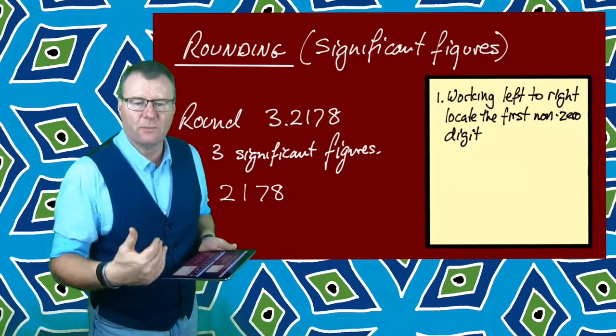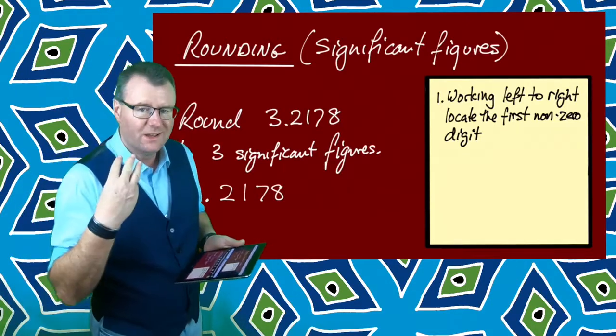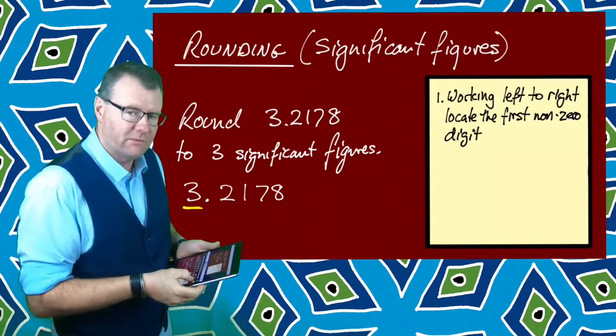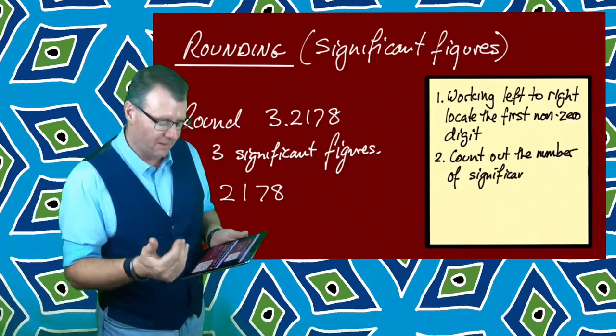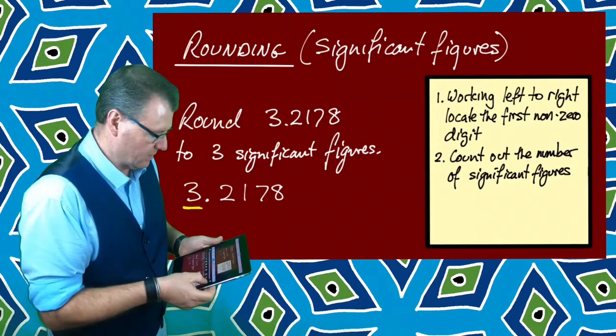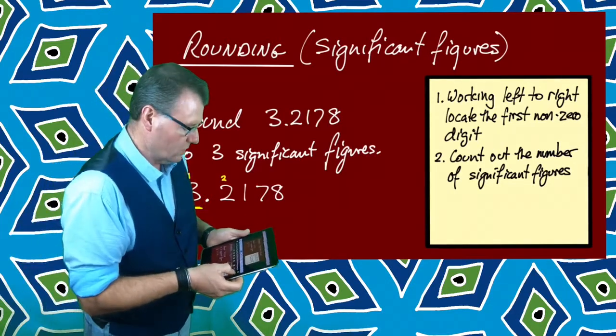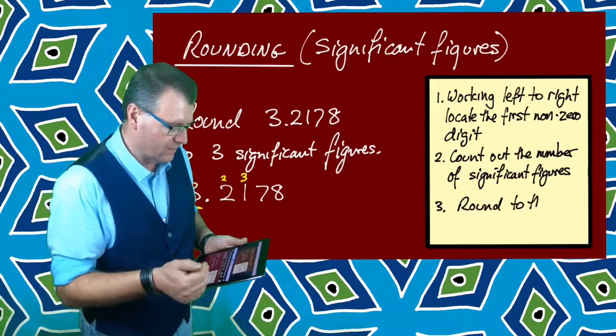That's where I'm going to start from, and I'm taking three significant figures for this question. From there I'm going to count out the number of significant figures, which in this case is three. So I'm going to count one, two, three. These are the ones I'm going to work with.